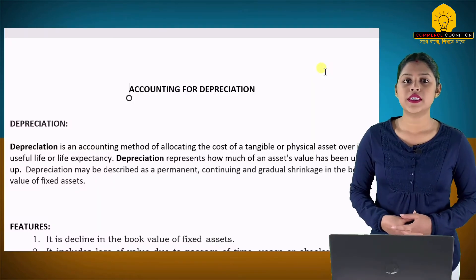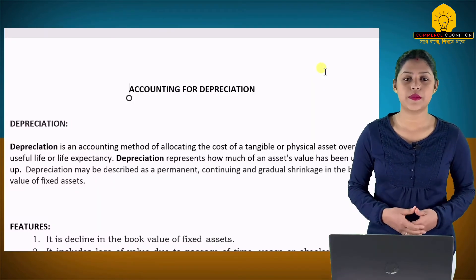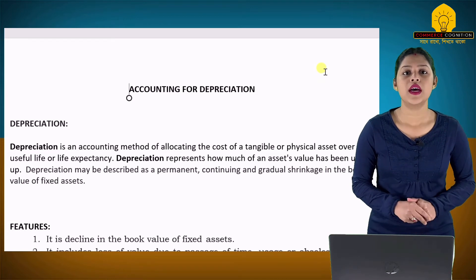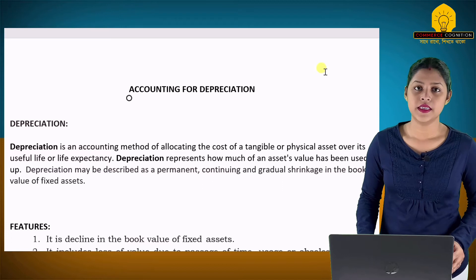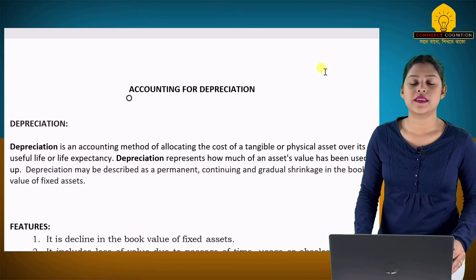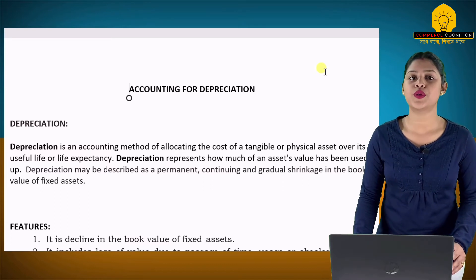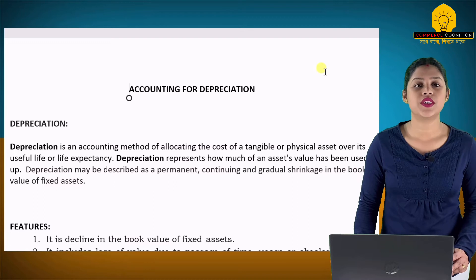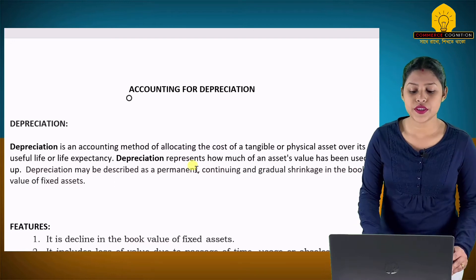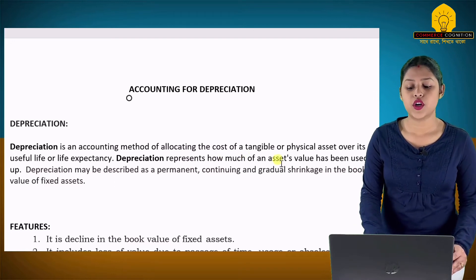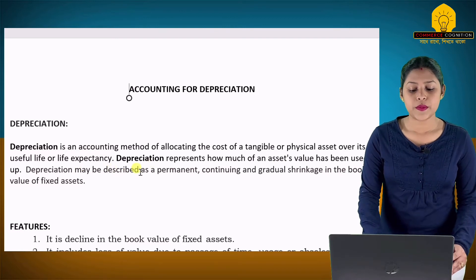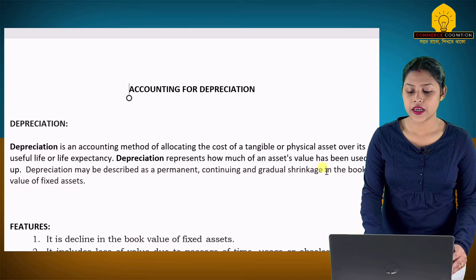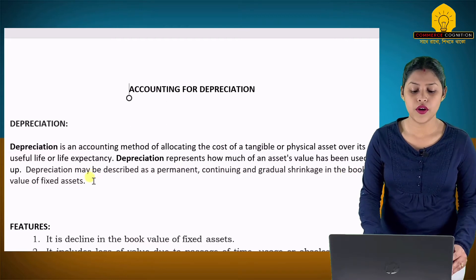If you want to learn about depreciation in a short video, you will see that even if you have a fixed tangible asset, you will see the same amount of depreciation. Depreciation represents how much of an asset's value has been used. Depreciation may be described as a permanent, continuing and gradual shrinkage in the book value of a fixed asset.